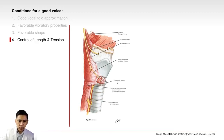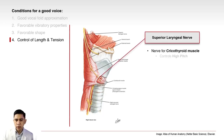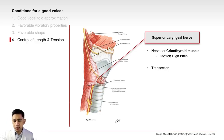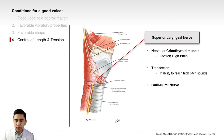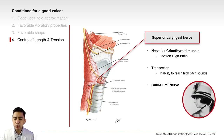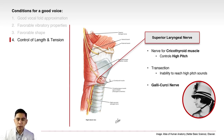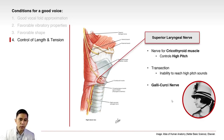The cricothyroid muscle is innervated by the superior laryngeal nerve, which controls the ability to reach high pitch. If this nerve is cut inadvertently during thyroid surgery, the patient will have inability to reach high pitch sounds. This nerve is sometimes called the Galli-Curci nerve, named after the opera singer Amelita Galli-Curci, who after thyroid surgery was unable to reach the high notes, ending her career as a celebrated soprano.